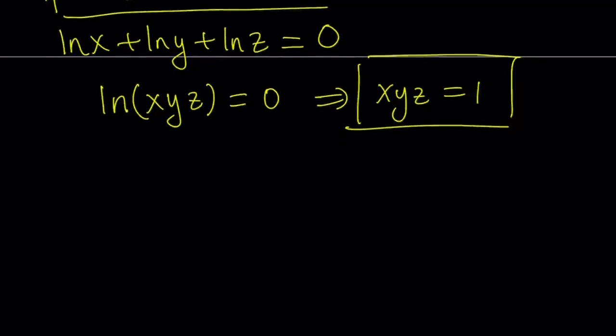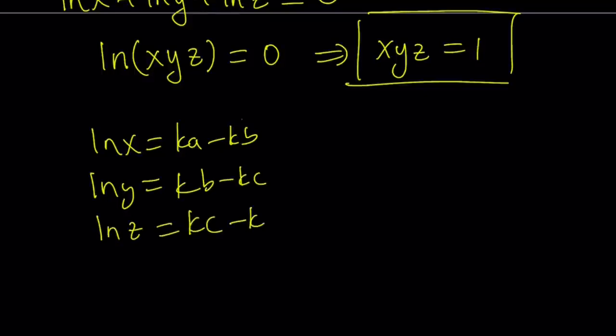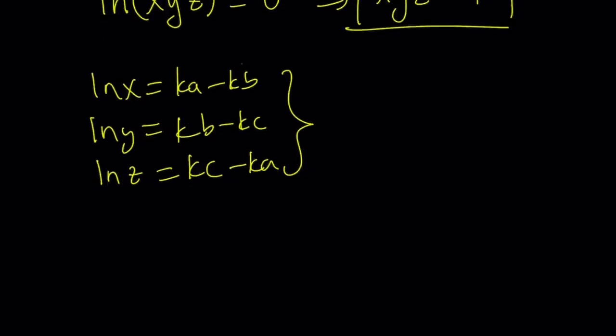And you can also approach, like, have an alternative from here. Let's say you got ln x plus ln y plus ln z equals zero, right? Or, let me go back a little bit and take it from here. So at the point where you got ln x equals kA minus kB, ln y equals kB minus kC, and ln z equals kC minus kA, you could also do the following to find x, y, z. You can kind of write x, y, z in terms of kA, bC. So by using the definition of logs, the base is e here. So you can basically write the x as e to the power of kA minus kB, y as e to the power of kB minus kC, and z as e to the power of kC minus kA.